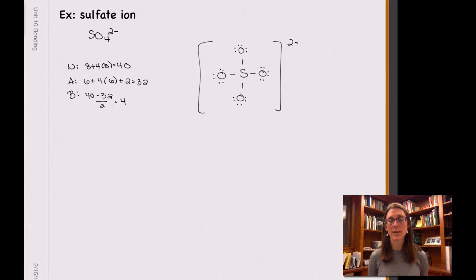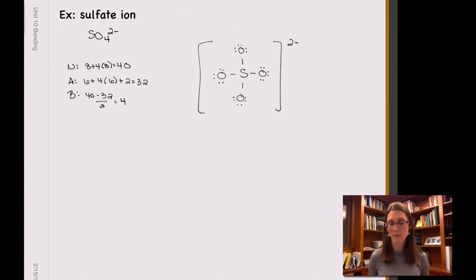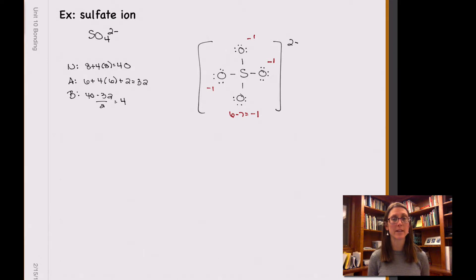Let's take a look at the oxygens — they're all the same, so this would apply to all of them. In this Lewis structure, each oxygen has six non-bonding electrons around it and one bond, so it's going to have a total of seven valence electrons allotted to it. However, oxygen typically has six valence electrons, so six minus seven is negative one. So all of those oxygens have a formal charge of negative one. Sulfur, on the other hand, just has four bonds to it, which gives it four valence electrons. It normally has six, so six minus four is a positive two.